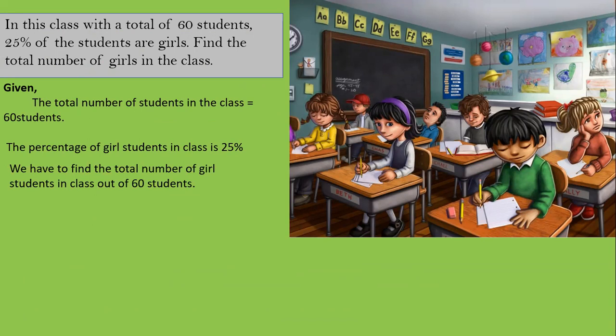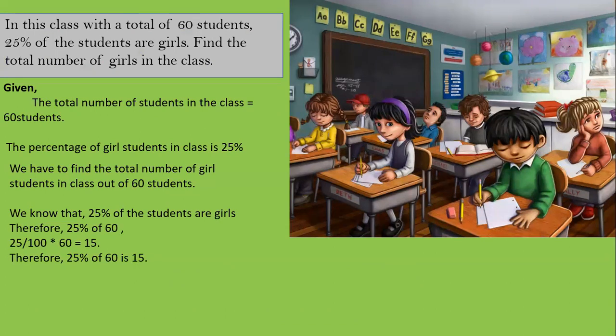We know that 25 percent of the students are girls, so we need to find 25 percent of 60. That is 25 by 100 into 60, which gives 15. Therefore 25 percent of 60 is 15 — hence 15 students out of 60 are girls.